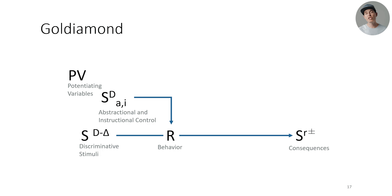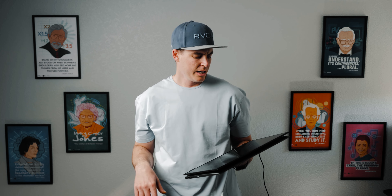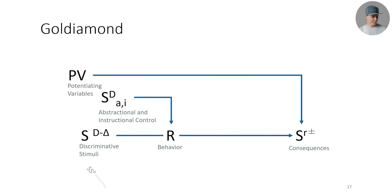Then there were potentiating variables. Think of them as motivation operations, but they weren't just tied to the consequence — you could potentiate stimuli, responses, or consequences. So it was a little bit more than that. And then there's stimulus props. The interesting thing here is there's a whole lot of stuff around me that I'm not interacting with; it's not part of the contingency whatsoever.